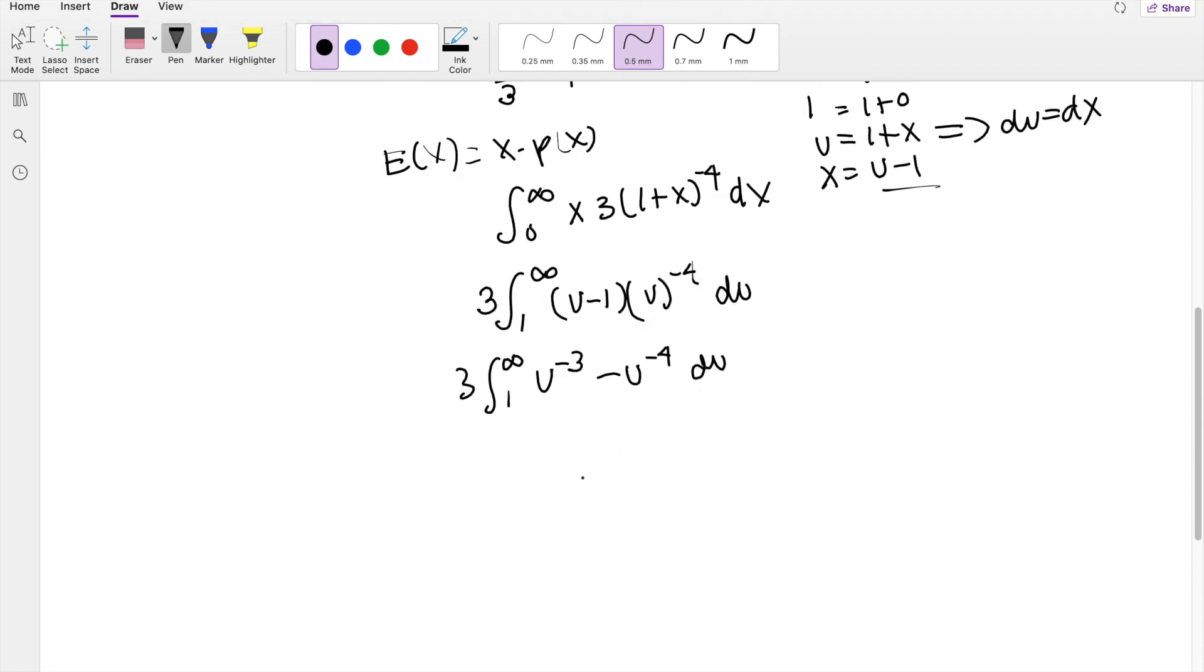Again, when I take the antiderivative, I add 1, so u to the negative 2, negative 1 half, plus u to the negative 3, 1 third, right, because the two negatives make a positive. Integrated from 1 to infinity, when I plug in the upper limit here, it's the same idea. 1 over a really big number is just 0, minus, plus 1 over infinity, that's just 0, too.